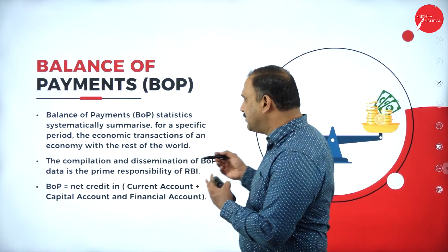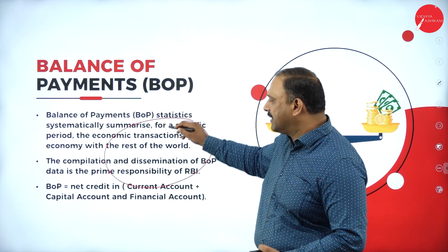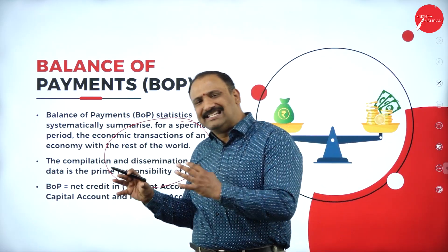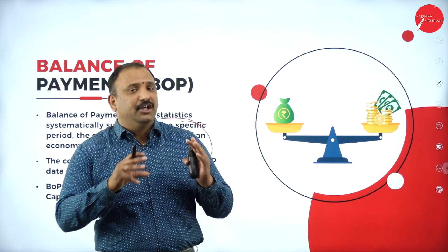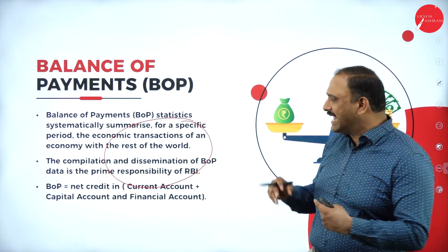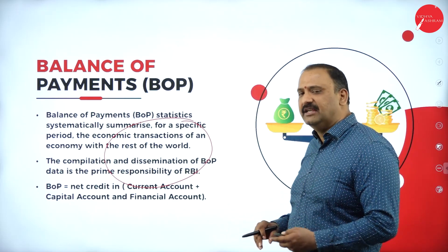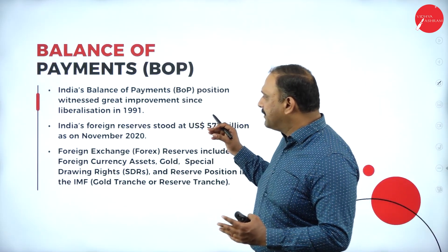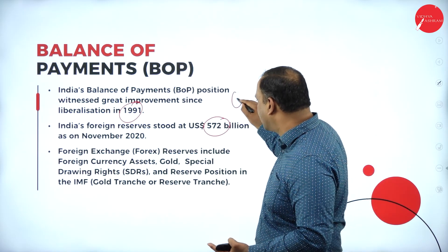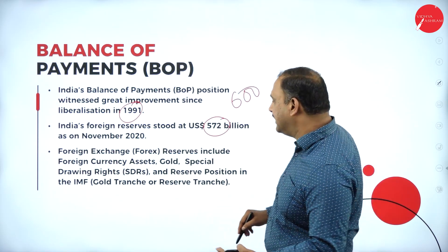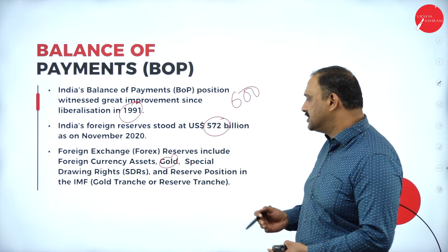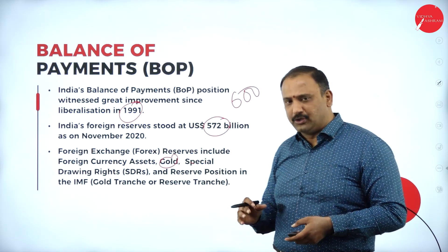The balance of payments statistically summarizes, for a specific period of time, the economic transactions with the rest of the world. We see that the balance of payment is actually favoring India. We do have a huge deficit, but as a growing country and a leader in exports, we will definitely have a stand in making our country even stronger. India's balance of payment witnessed a great movement in 1991 — reserves stood at $572 — and now we have crossed more than $600 billion dollars, with forex reserves including gold, special drawing rights, and IMF position.